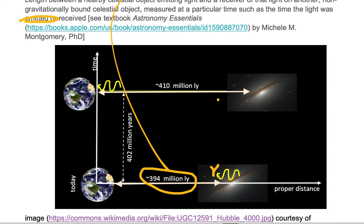Because both the Earth and the galaxy are moving apart as space expands outward over time, it takes this photon of light 402 million years to reach planet Earth. When the photon finally reaches planet Earth, both Earth and the galaxy have each moved away from each other 8 million light years.